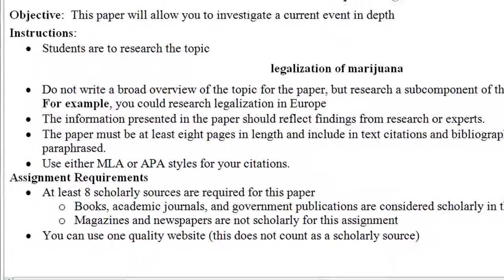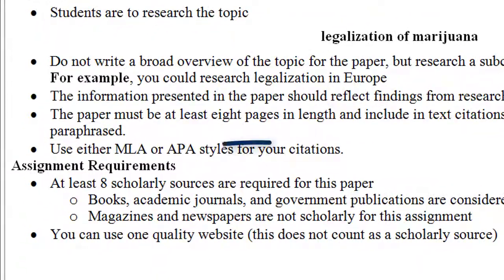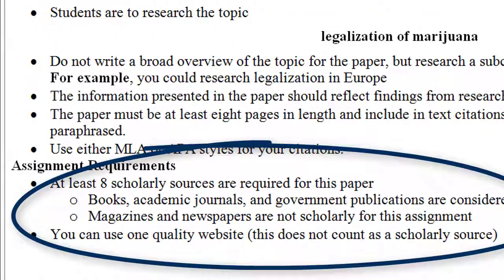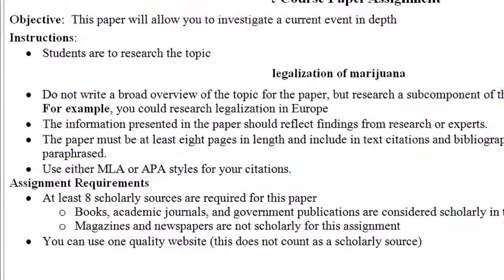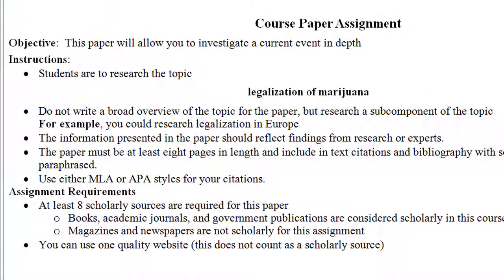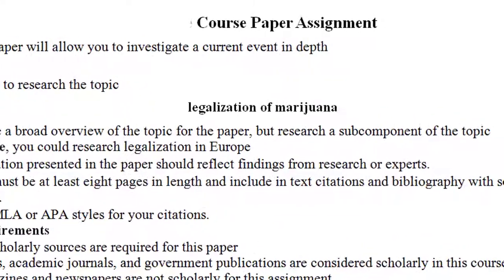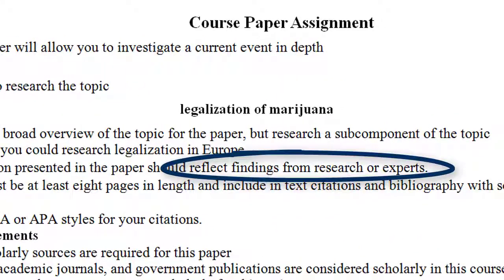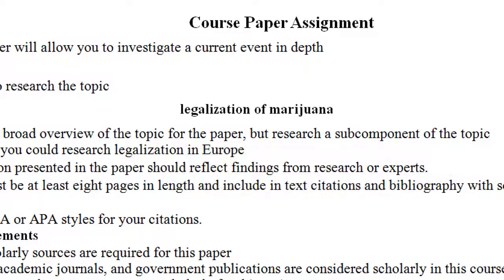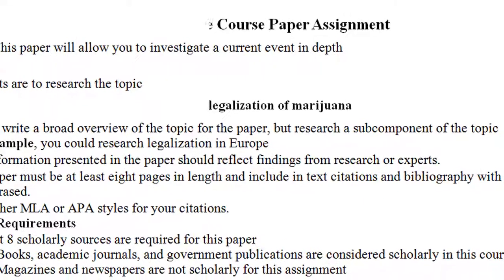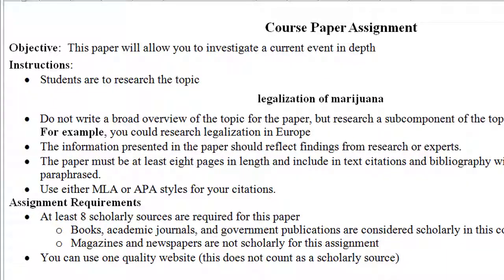The easiest way to find information for your assignment is by narrowing out what you can and cannot use. For instance, can you use information based on personal opinions, or do you need information supported by research or other types of evidence? Most college-level assignments require information developed through research, rather than information based on personal opinions.